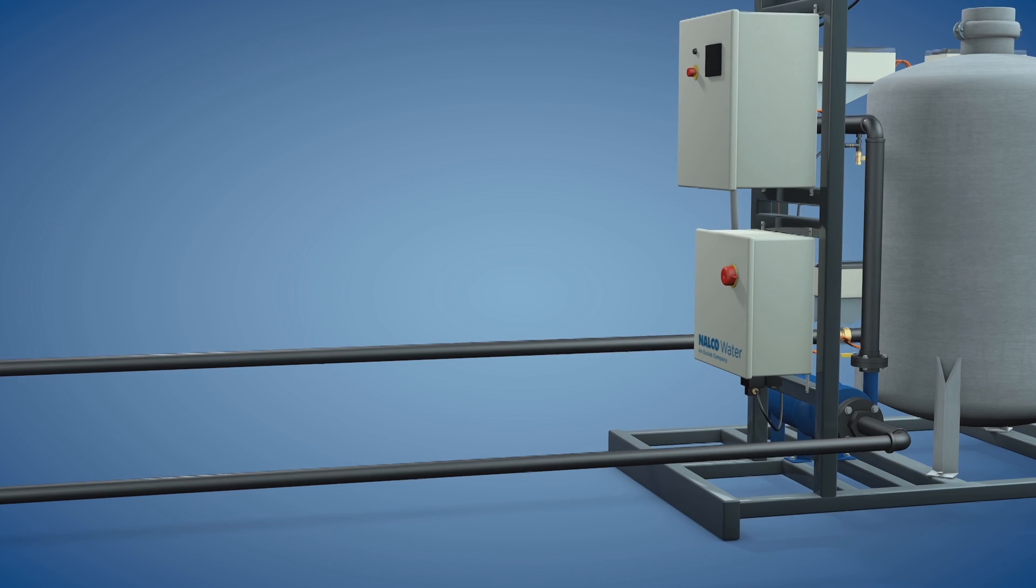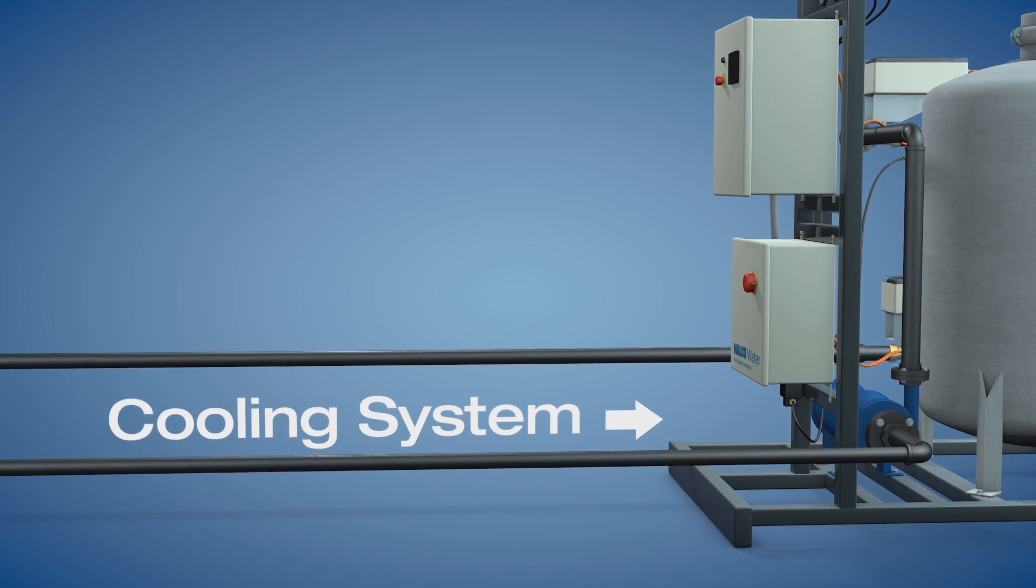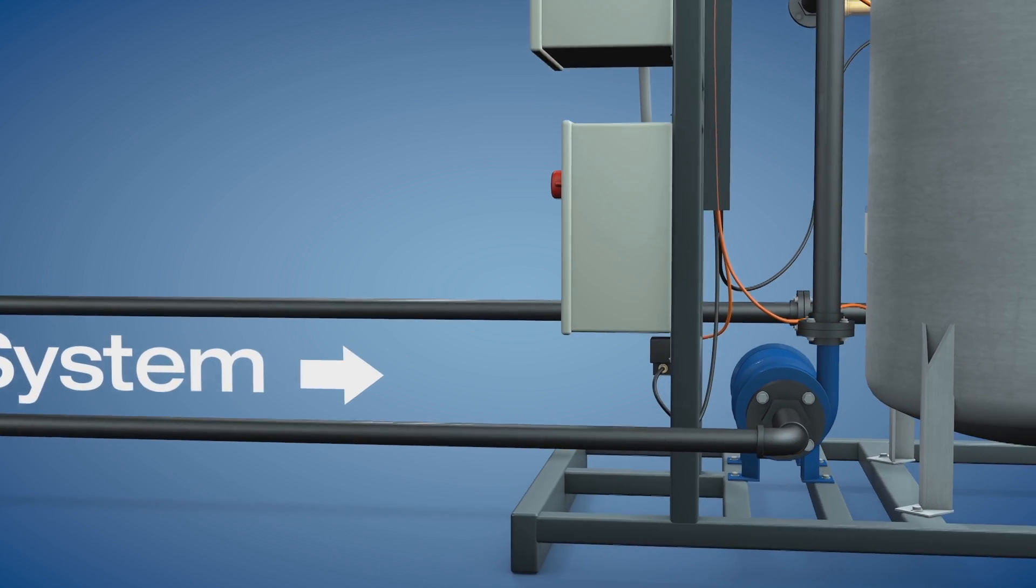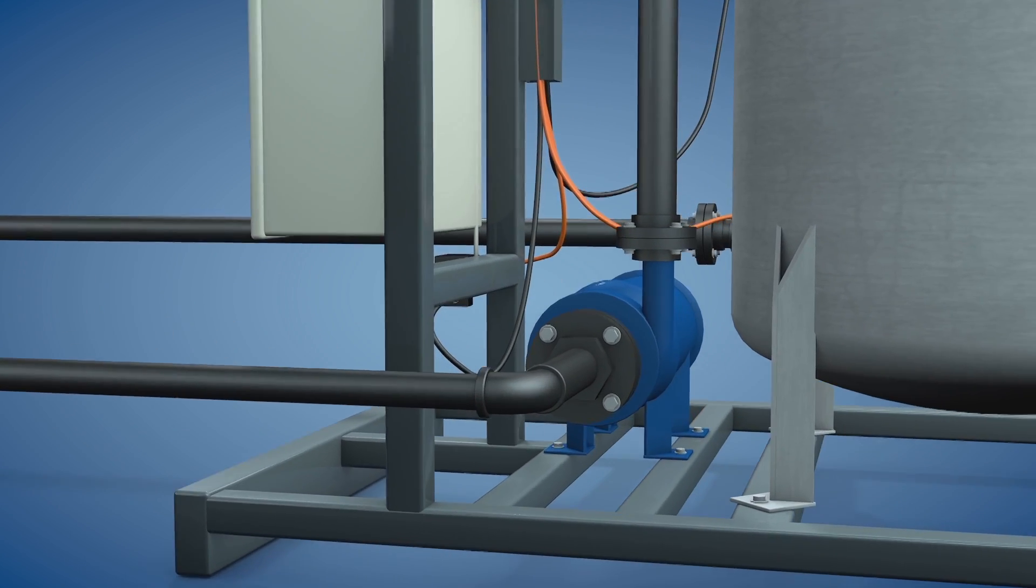The filter inlet pipe is fed from the side stream of the cooling system. When unfiltered water arrives at the filter inlet, the centrifugal pump increases its velocity.